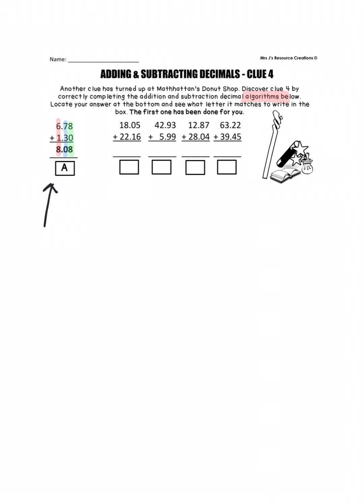And then when you add, you begin with your smallest place value position, which in this case is hundredths, and then go from there. Okay, so let's begin. We're not going to start with the one that's already done. Let's start with 18.05 plus 22.16.